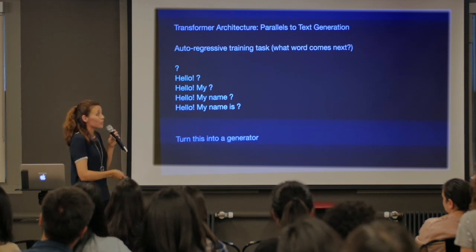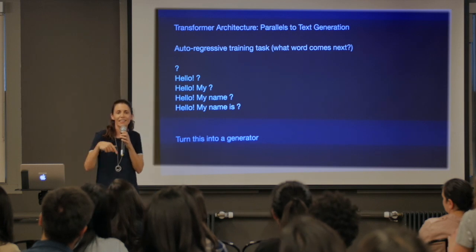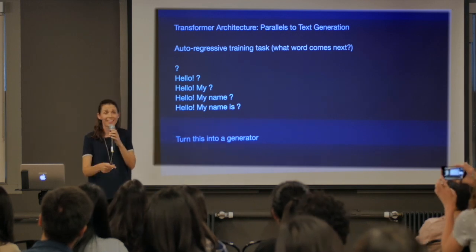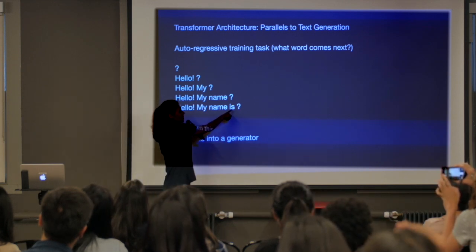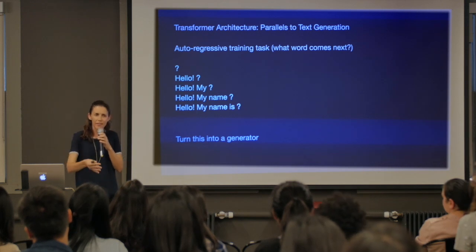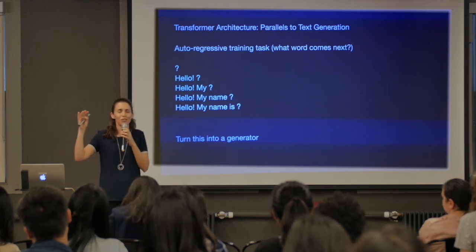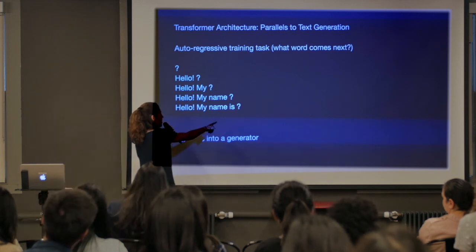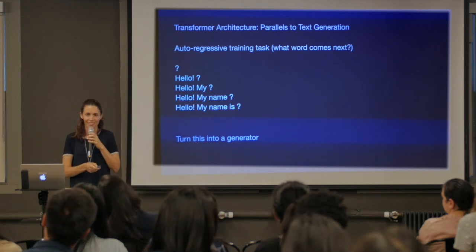Once you have a model that's really good at this, you can then turn it into a generator by sampling from the model according to those probabilities. The nice thing is you get a kind of coherent structure — in music there are moments where you have to choose a certain rhythm or a certain note, otherwise it just sounds bad. But then there are also a lot of points where the music can go in interesting different directions.